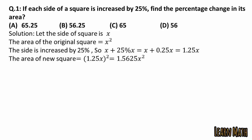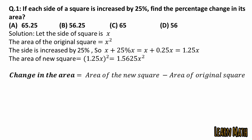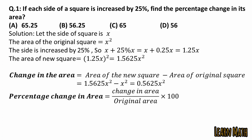That is equal to 1.25x. The area of the new square will be (1.25x) squared, which is equal to 1.5625x squared. The change in area is new area minus original area: 1.5625x squared minus x squared equals 0.5625x squared. The percentage change is change in area divided by original area multiplied by 100: 0.5625x squared divided by x squared multiplied by 100 gives 56.25 percent. The correct option is option B.